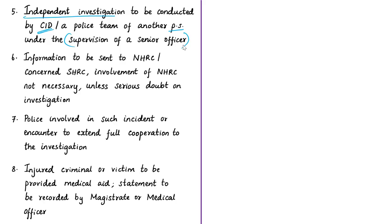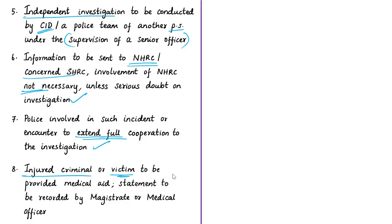The requirements also specify minimum investigation standards. Information of the incident must be sent to the NHRC (National Human Rights Commission) or the concerned State Human Rights Commission, though NHRC involvement is not necessary unless there is serious doubt about independent and impartial investigation. Police officers accused in encounter death cases must extend full cooperation to the independent investigation. If an accused is injured but not killed, medical aid must be provided and their statement recorded by a magistrate or medical officer.